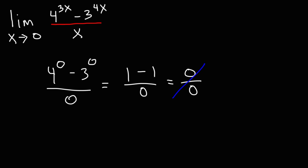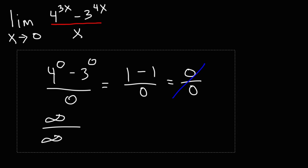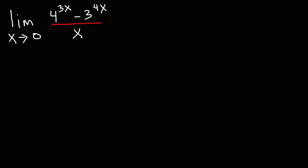Whenever you have one of the indeterminate types, such as 0 over 0 or infinity over infinity, and when you're dealing with limits, you can use something called L'Hôpital's rule. What you need to do is take the derivative of the numerator and of the denominator separately — you're not using the quotient rule here. You just need to differentiate the numerator and the denominator of the fraction separately.